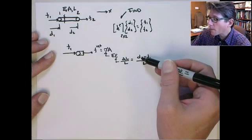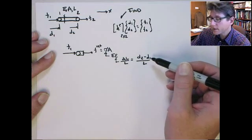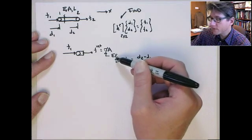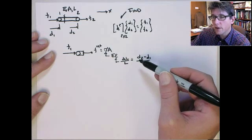So note why we want to keep... If D2 is greater than D1, the bar is elongating. So delta L is positive, the strain is positive, and the stress is positive.